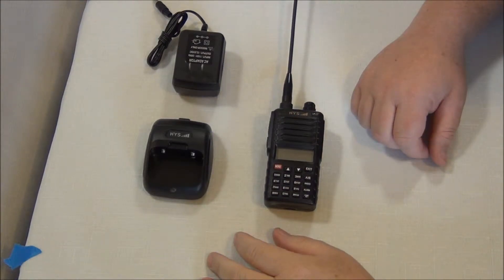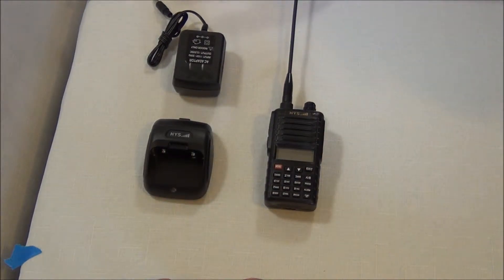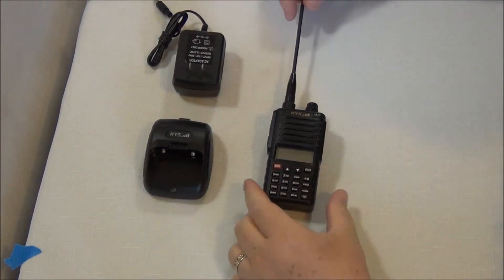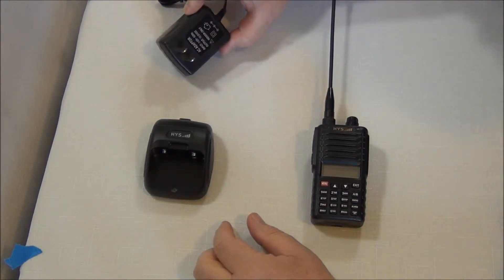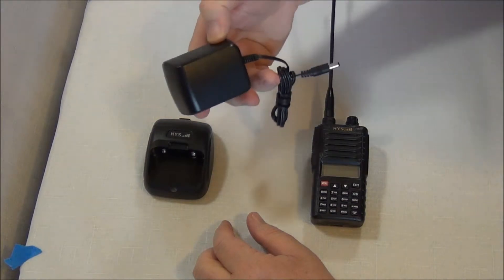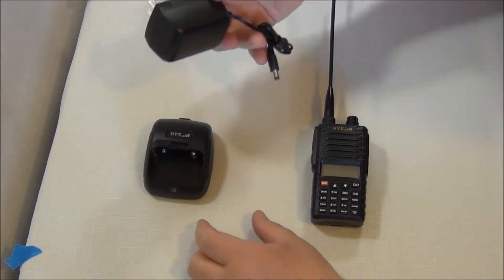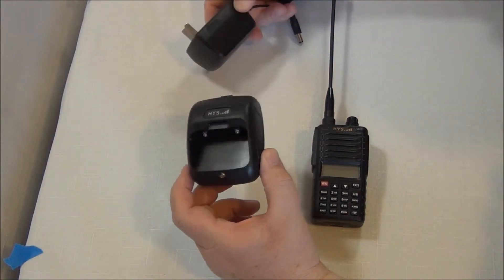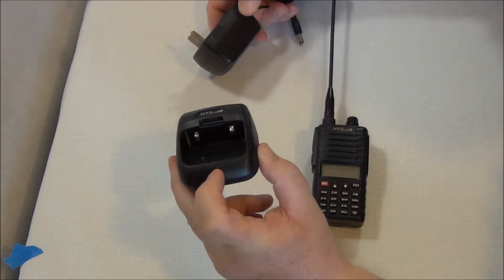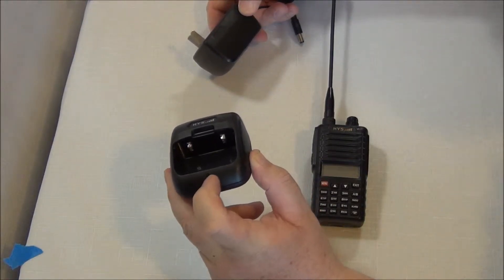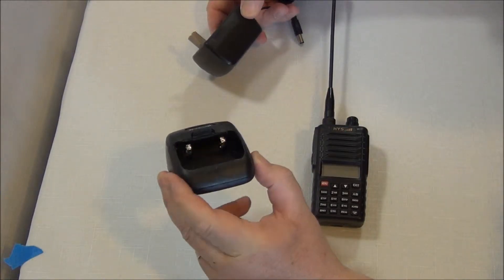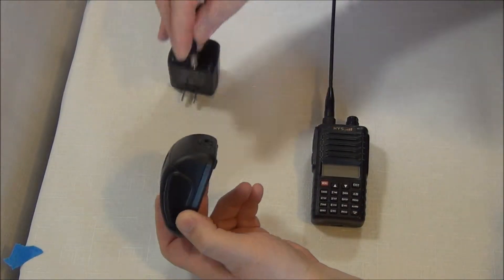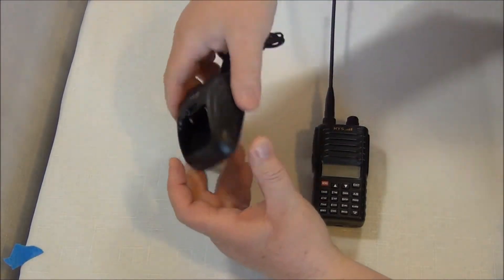Okay, this is the radio after it's been unboxed and assembled. Here's the regular household AC adapter, nothing particularly special about that. There's the charger base. It does have an LED here in the front, and the LED turns red when it's charging and green when it's fully charged.